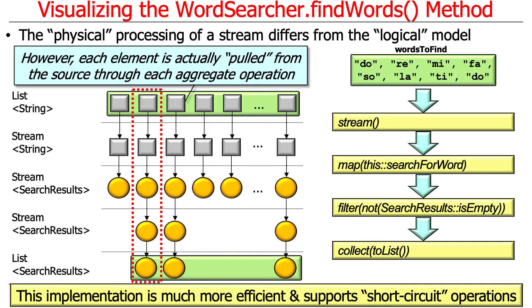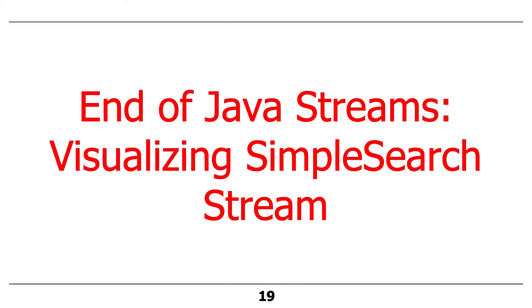We'll also talk later about how streams are implemented at runtime, which is quite interesting. When the compiler sees these aggregate operations, it actually builds up a linked list of data structures that keep track of the operation and its behavior, then pulls the data through that linked list. It creates a very interesting runtime structure, which we'll discuss later in the course when we have a better opportunity to cover the internals of streams. So that's a quick overview of what streams look like, so that when we talk about the code, it'll probably make a lot more sense.